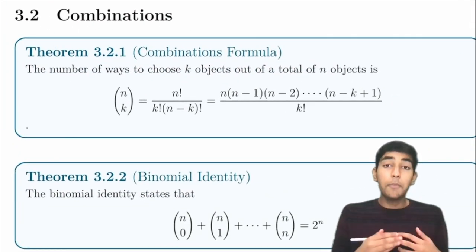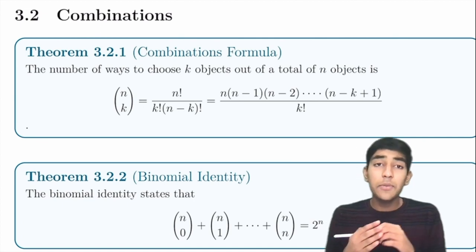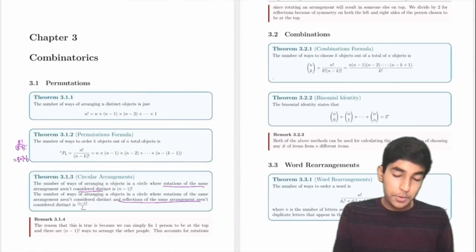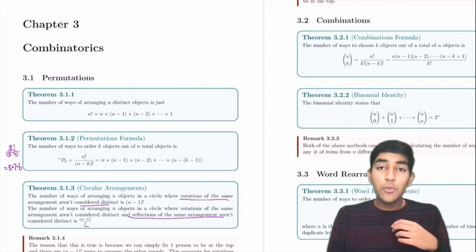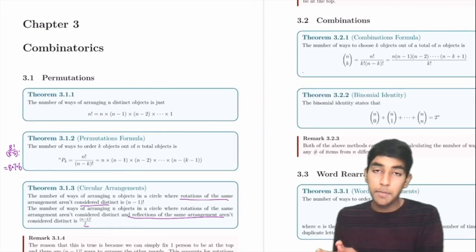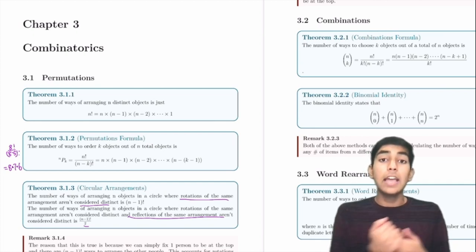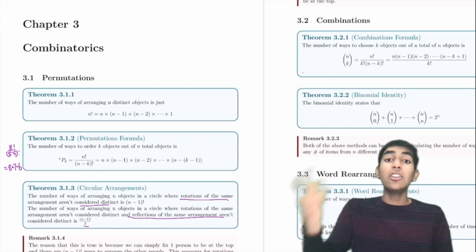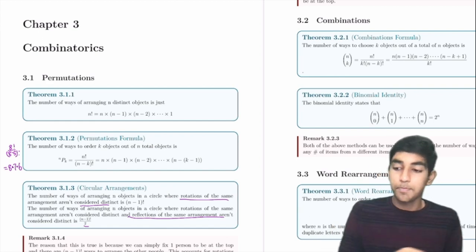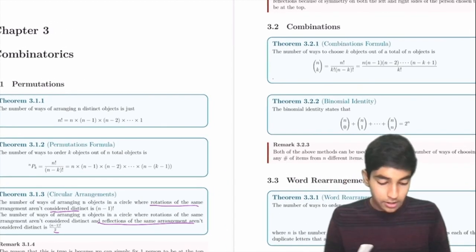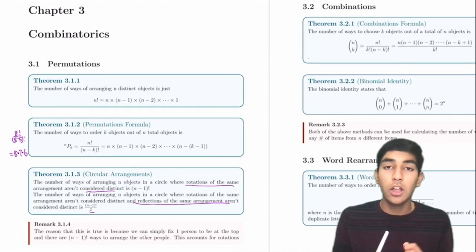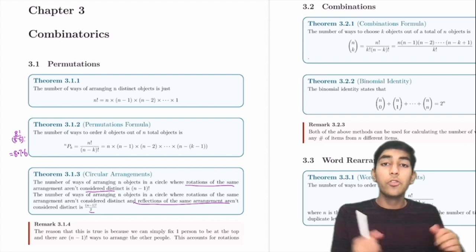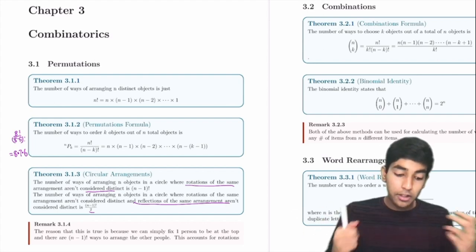Combinations: choosing k objects out of n unordered is nCk = n! / (k!(n−k)!). The key distinction: 'choose' and 'select' indicate combinations, while 'order' and 'permute' indicate permutations. For example, 8 choose 3 is the number of ways to choose 3 pencils from 8.